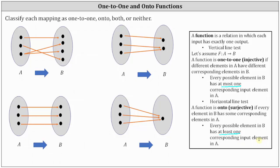There are a couple of ways to describe both one-to-one and onto functions. To analyze our mappings, we will focus on the conditions of having at most one and at least one corresponding input element in B.